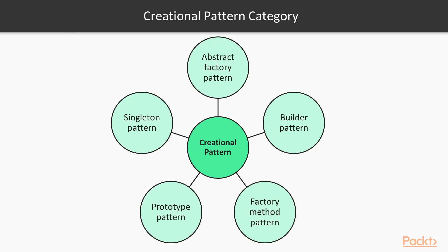There are five well-known patterns that are a part of the creational pattern category. First is the abstract factory pattern — it provides an interface for creating related objects without specifying the concrete type. Next is the builder pattern — it separates the construction of a complex object from its representation, so the same process can be used to create similar types. After that is the factory method pattern, which creates objects without exposing the underlying logic of how the object is created. Then the prototype pattern, which creates an object by cloning an existing one. Last is the singleton pattern, which allows one and only one instance of a class for the lifetime of an application.